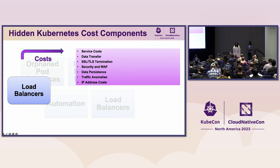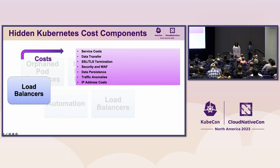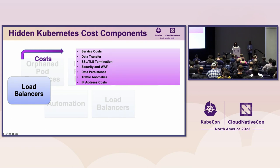If you have multiple environments or frequently create or destroy clusters, you may forget to deallocate load balancers you no longer need — going back to hygiene. Also, if you terminate SSL or TLS at the load balancer level, this can lead to cost increases, especially if you leverage premium certificates or require significant encryption and decryption resources.